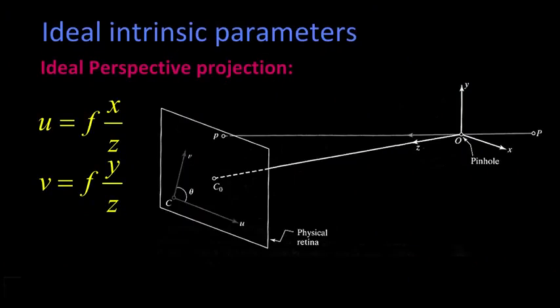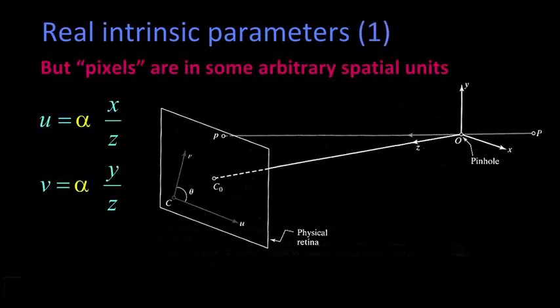The first problem is f might be in millimeters. So we might have a 10-millimeter lens or a 50-millimeter lens. But the pixels, the screen pixels, they're in some arbitrary coordinate that depends upon exactly how many pixels we get per millimeter in the sensor.